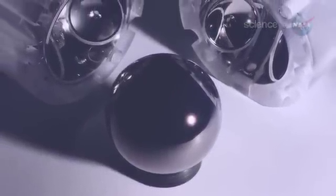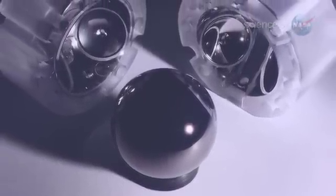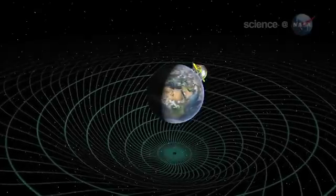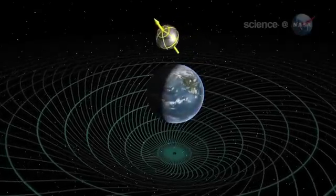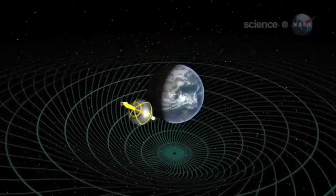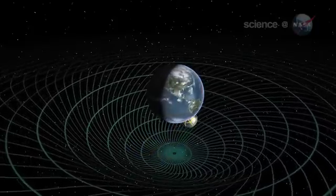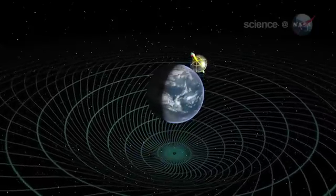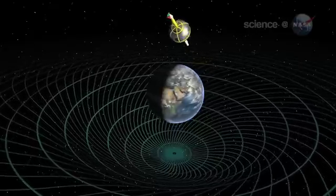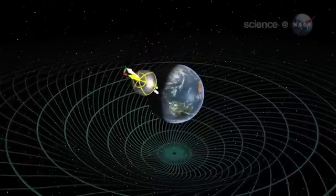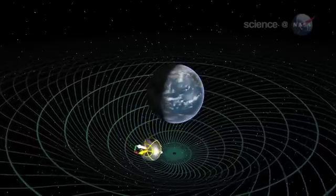Gravity Probe B carried some superspherical gyros into Earth's orbit to see what they would do. In practice, this simple idea is extremely difficult. According to calculations, the twisted spacetime around Earth should cause the axis of the gyros to drift by a tiny amount. Really tiny. It's like measuring the thickness of a sheet of paper held edge-on 100 miles away.